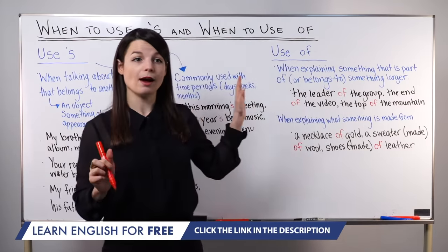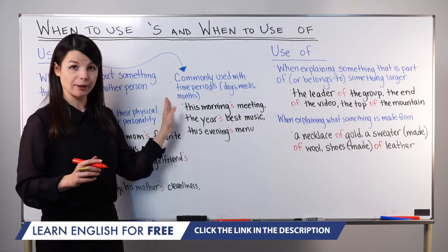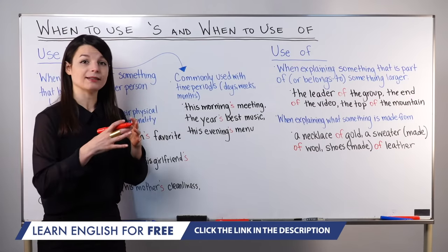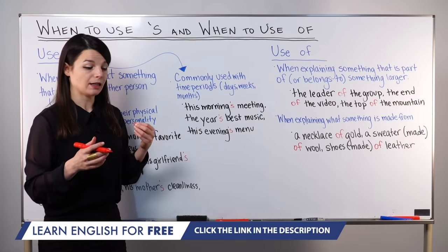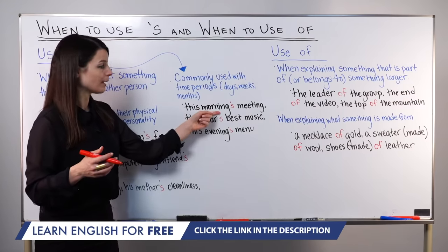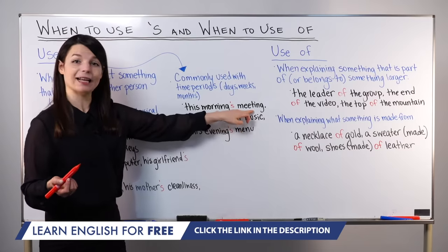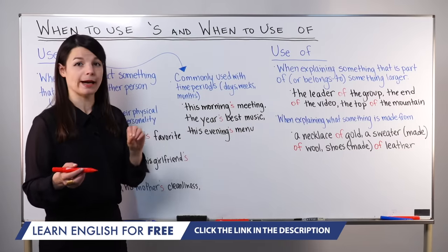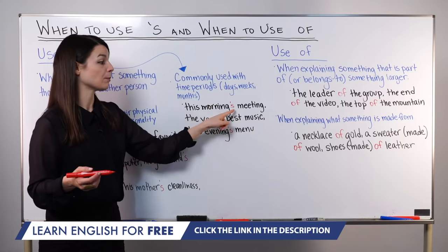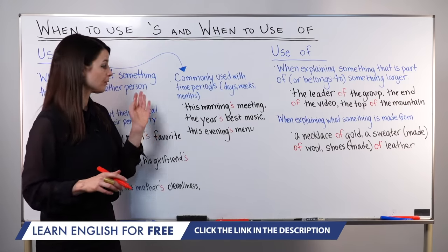Another important point about apostrophe S use is that it's commonly used with time periods. Time periods means days, weeks, or months, for example. It can also mean points in time or periods of time in a day. For example, 'this morning's meeting' — here, morning is my time period. This means the meeting that happened this morning or the meeting that's going to happen this morning. We can think of this as a meeting belonging to this morning. We do not say 'the meeting of this morning' — it sounds very unnatural.